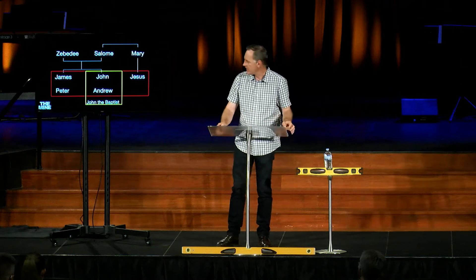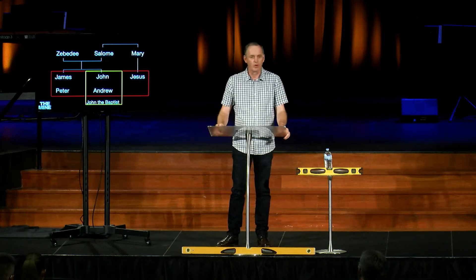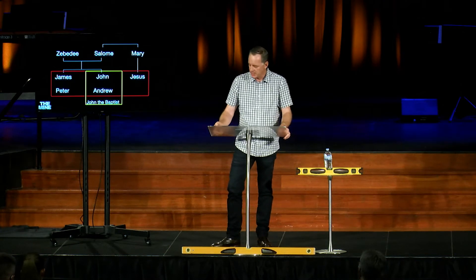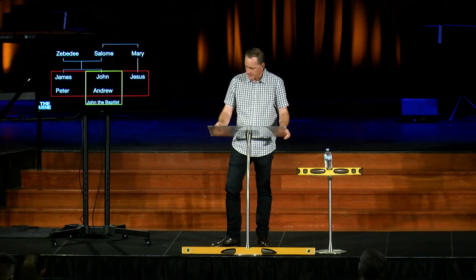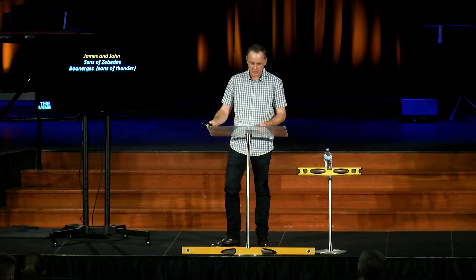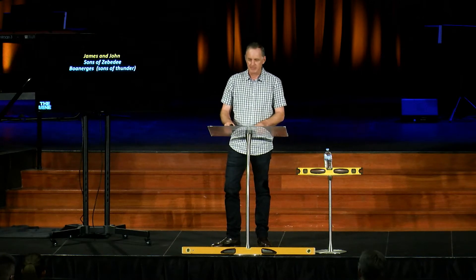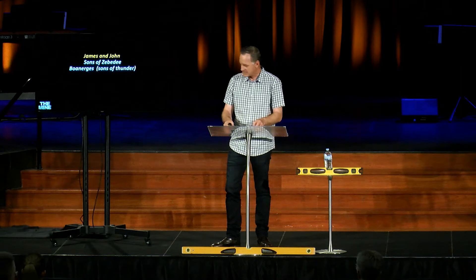Jesus called twelve disciples including James, John, Peter, and Andrew. He called James and John the sons of Zebedee and also referred to them as Boanerges — sons of thunder. Although it's not exactly clear what that means, a couple of scriptures indicate it's due to their temperament: they were pretty fiery and very passionate about power.